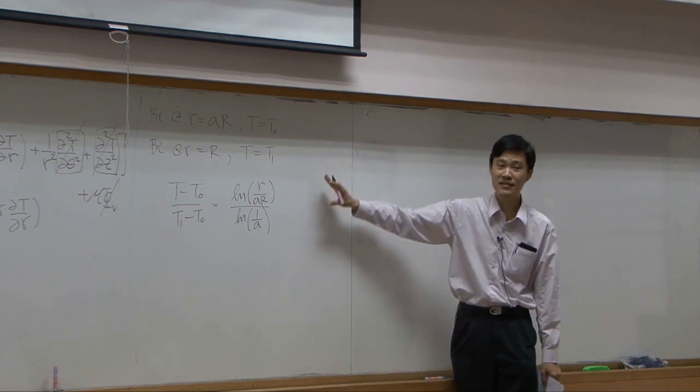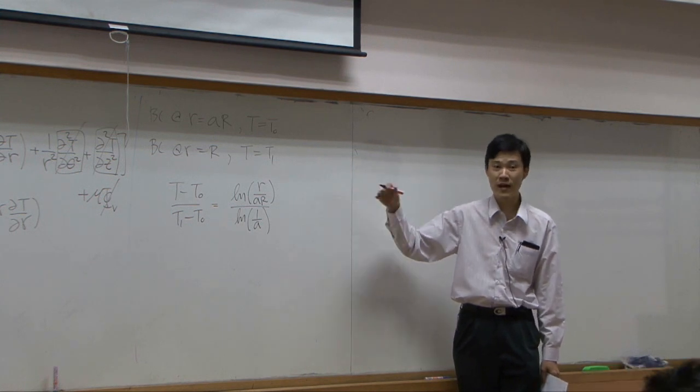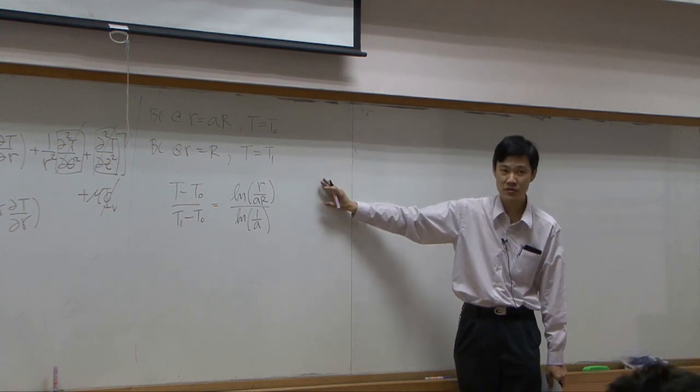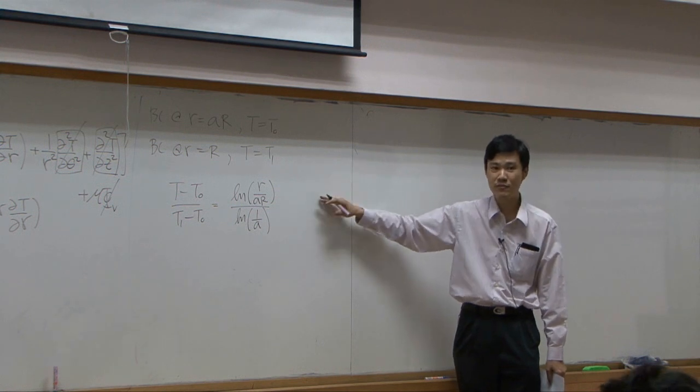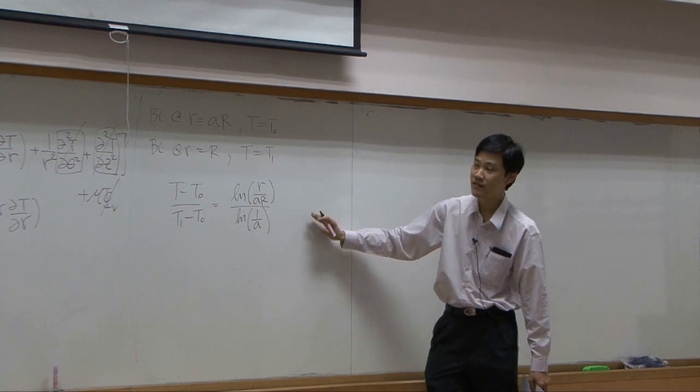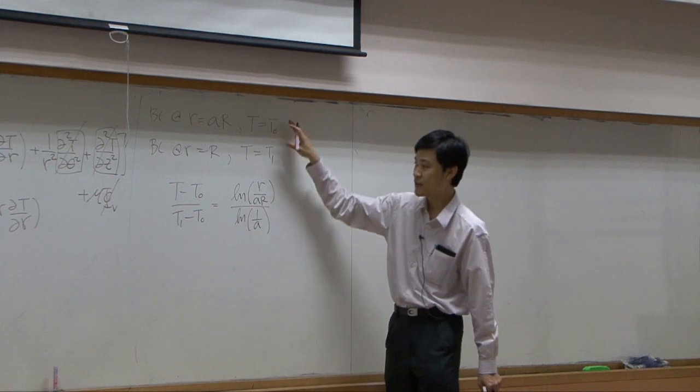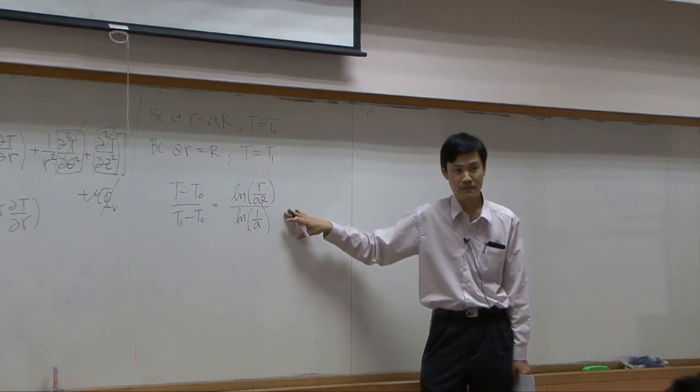But of course, this is just part a and part b. For one problem, let's say this one is problem two. You may have 2a, 2b, 2c, and 2d. Okay? Up to this point, it's just 2a. 2a is dropping terms, 2b would be solving for temperature profile.